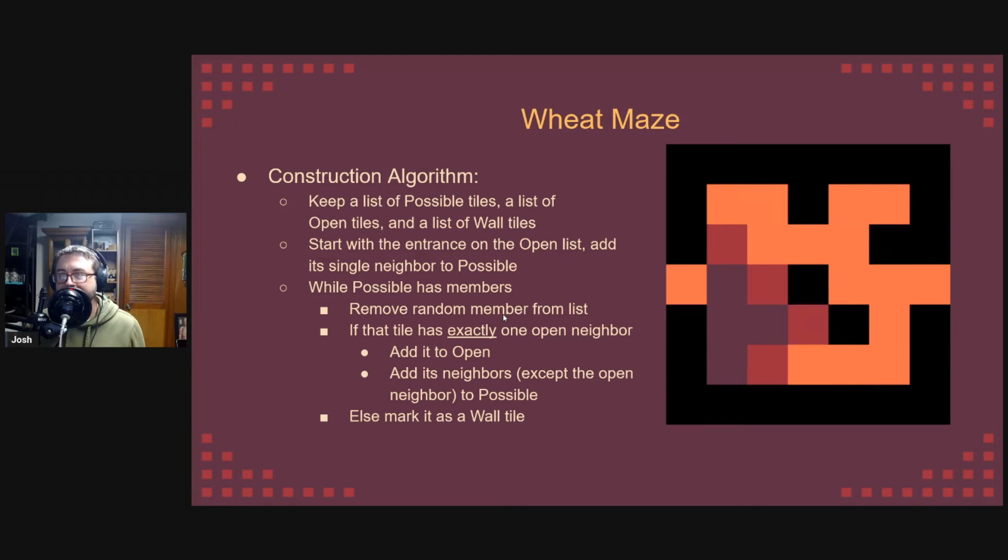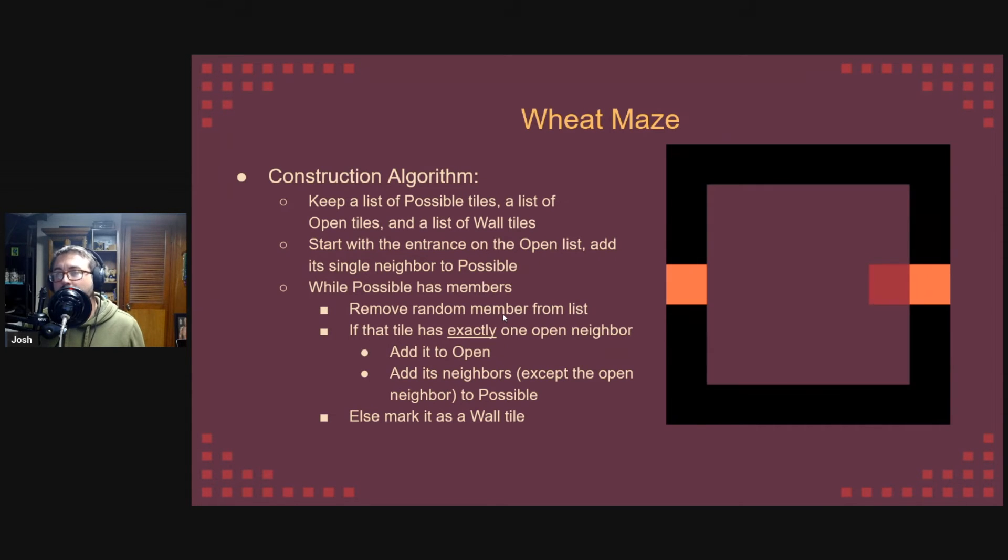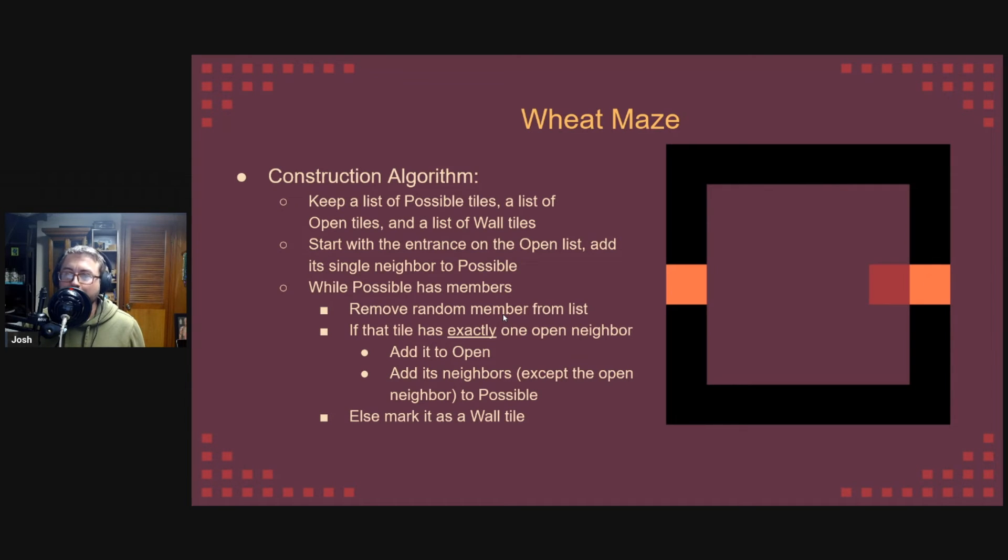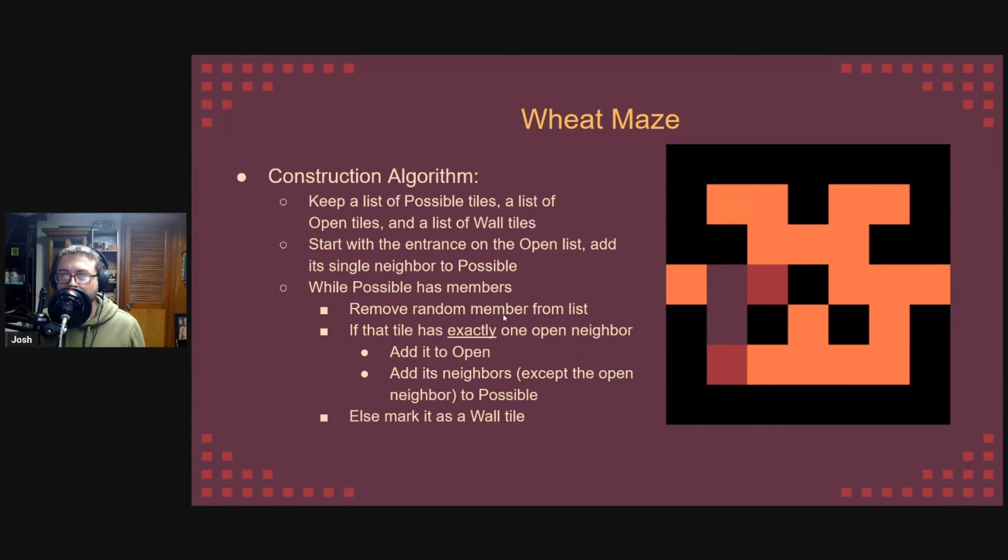So here's the construction algorithm for it. I won't go into too much detail, but I will note that there is a list of open tiles in orange, possible tiles in red, and wall tiles in black. At each round of maze construction, we take a possible tile that has exactly one open neighbor, and we make it open. If it has more than one open neighbor, it becomes a wall. This gives us a branching maze that usually spans the grid and doesn't contain any loops.